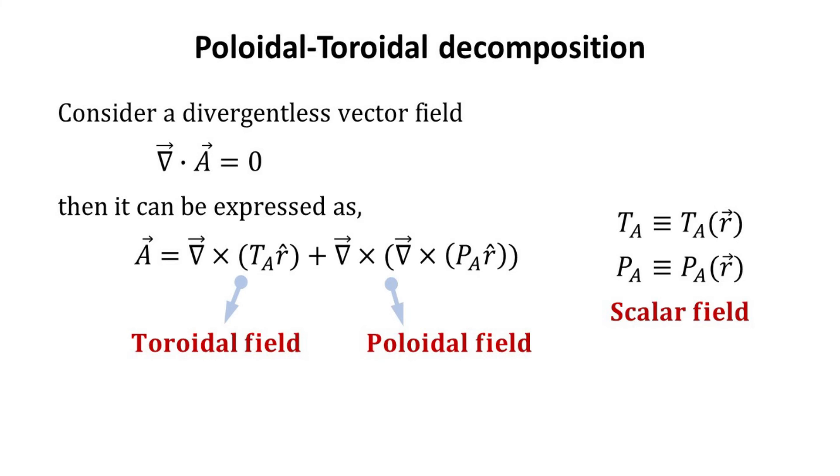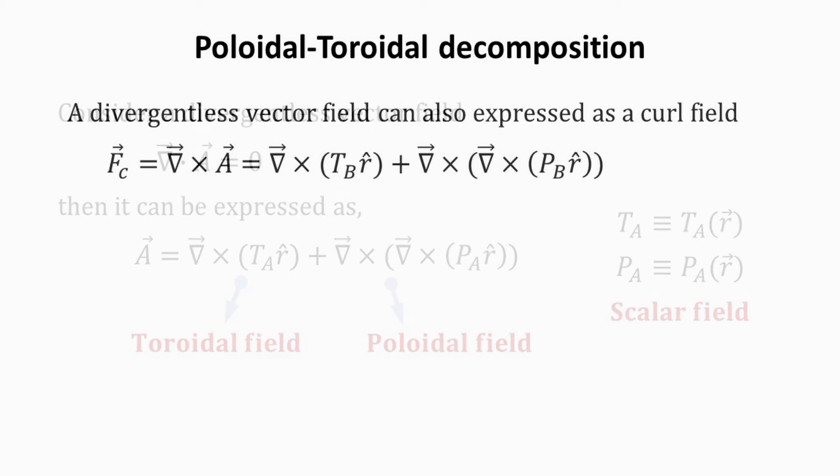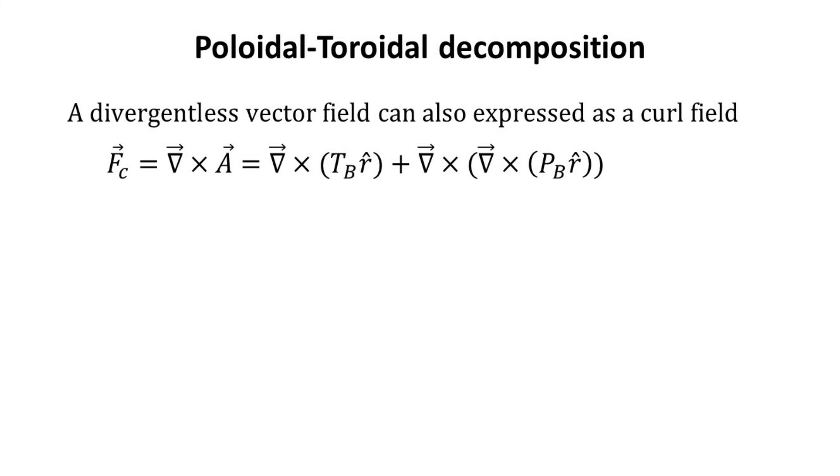A vector field which is divergentless can be decomposed into a toroidal and poloidal vector fields. These vector fields can be expressed in terms of the scalar field, T_A and P_A as shown. The curl field F_C, which is defined as the curl of the vector field A, is also divergentless. Thus, we can also perform the same poloidal toroidal decomposition.